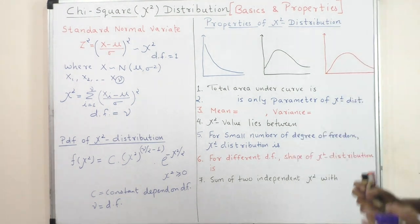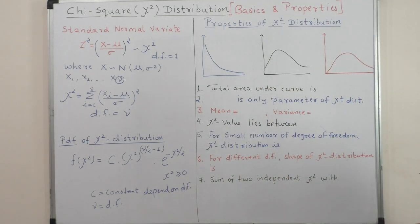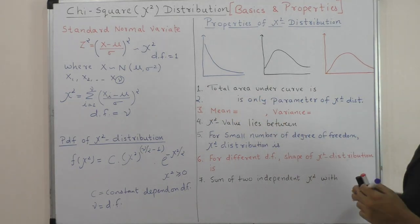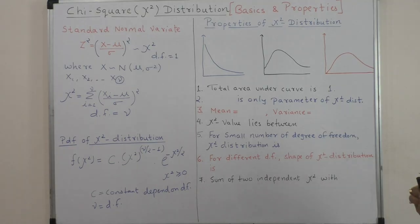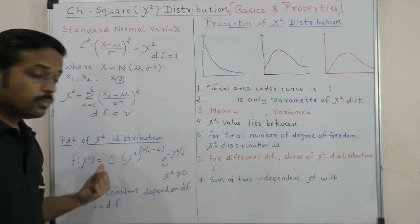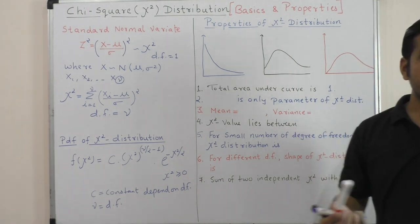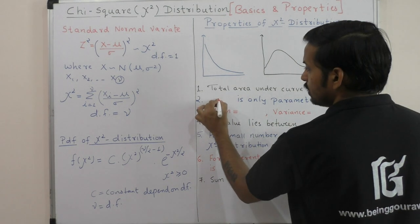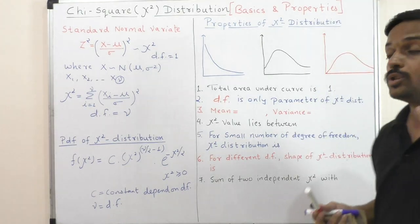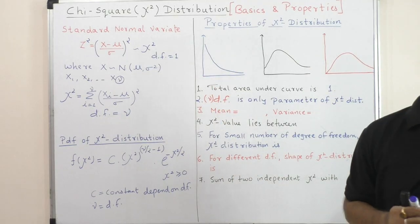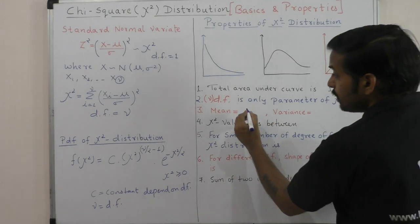Now let us read the properties of chi-square distribution. The first property is: chi-square distribution has one parameter, which is the degree of freedom — denoted by nu. The second property is that we use the symbol nu for degree of freedom. The third property: the chi-square distribution mean is equal to the degree of freedom, nu.